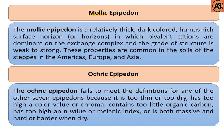The next one is the mollic epipedon. The mollic epipedon is a relatively thick, dark-colored, humus-rich surface horizon in which bivalent cations are dominant on the exchange complex and the grade of structure is weak to strong. These properties are common in the soils of the steppes in the Americas, Europe, and Asia.